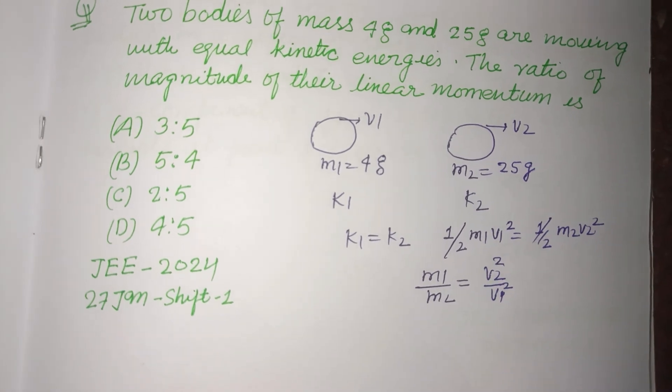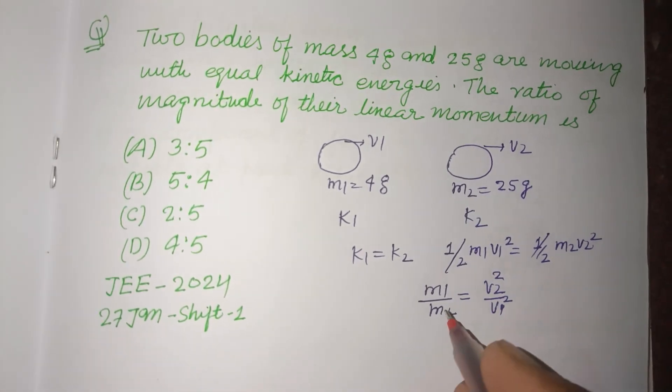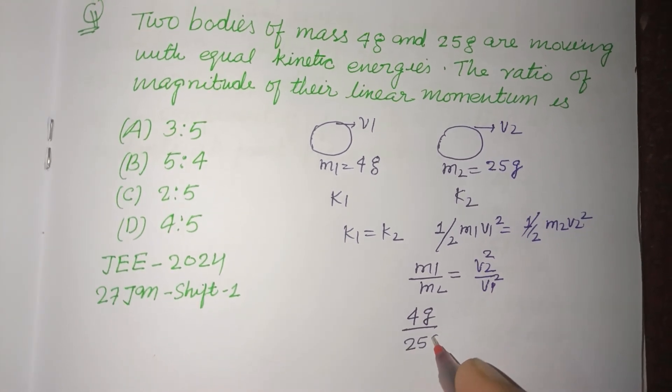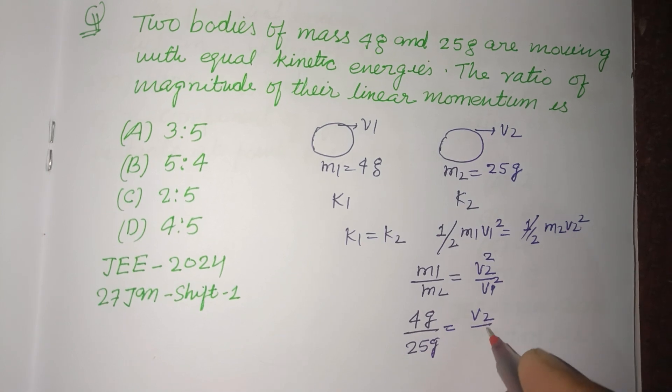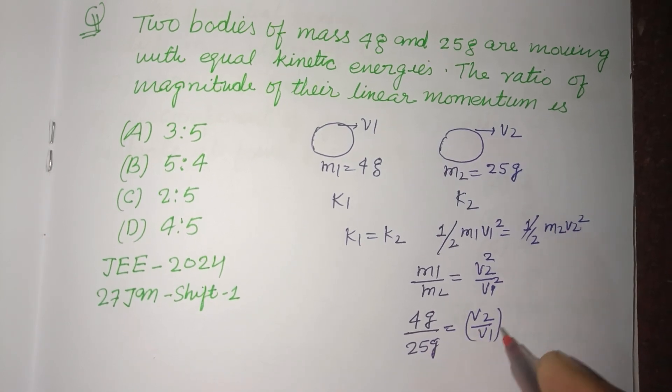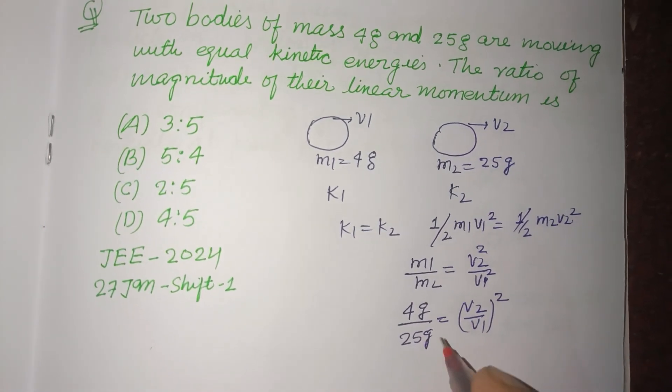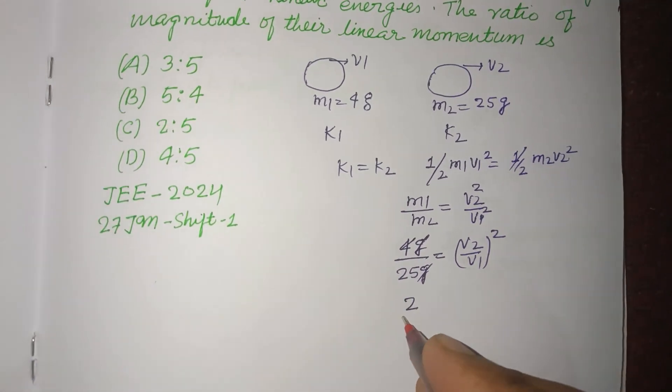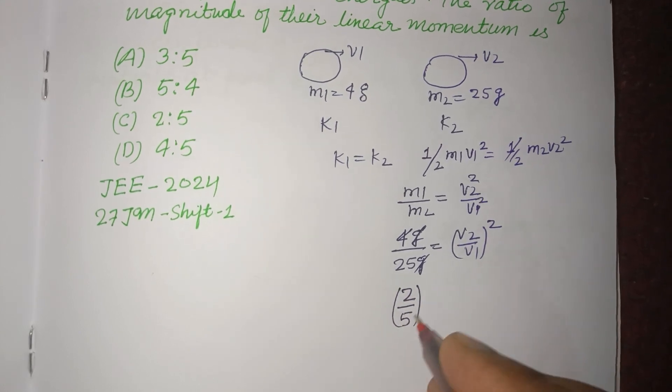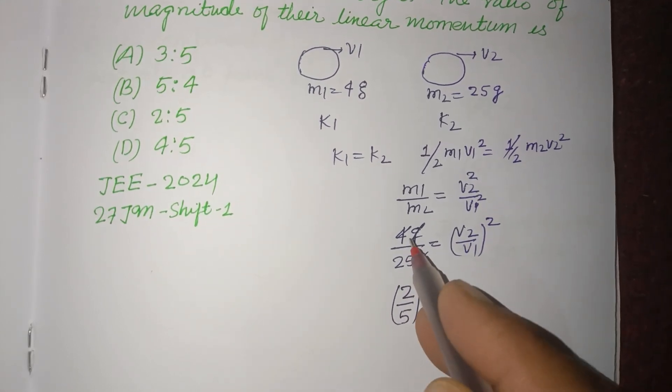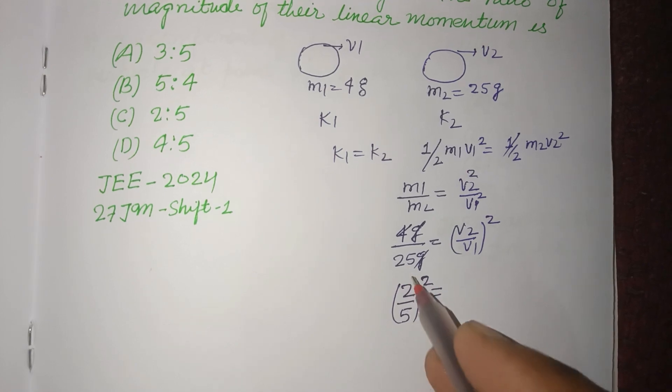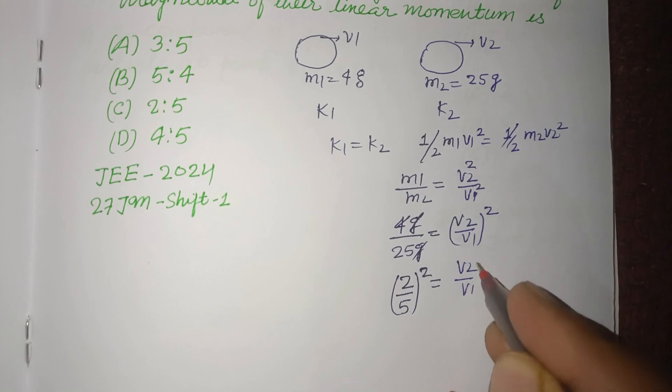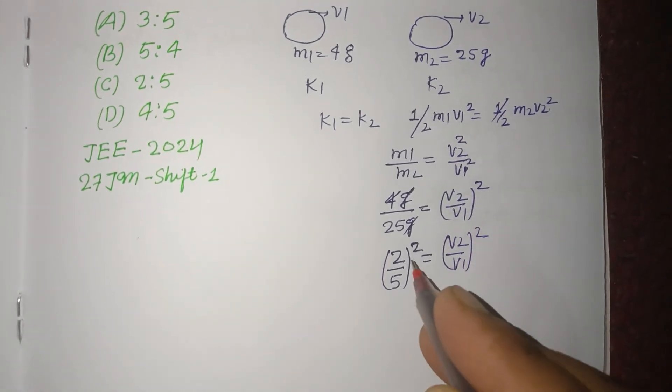Here mass is given to us as 4 gram and 25 grams. Therefore v2 upon v1 whole squared equal to 4 upon 25. So 4 can be written as 2 upon 5 whole squared, because 2 is the square root of 4 and 5 is the square root of 25. So v2 over v1, on taking square root, we got v2 over v1 equal to 2 upon 5.